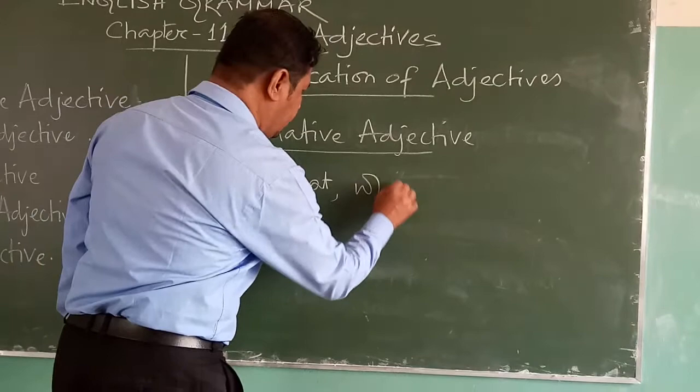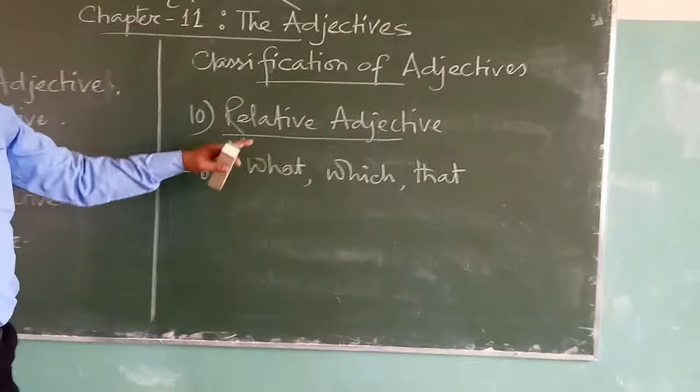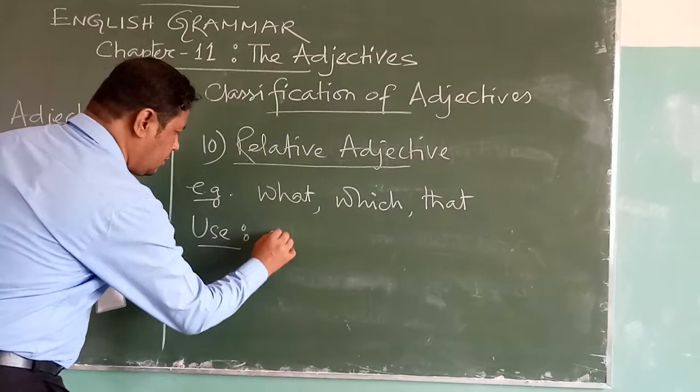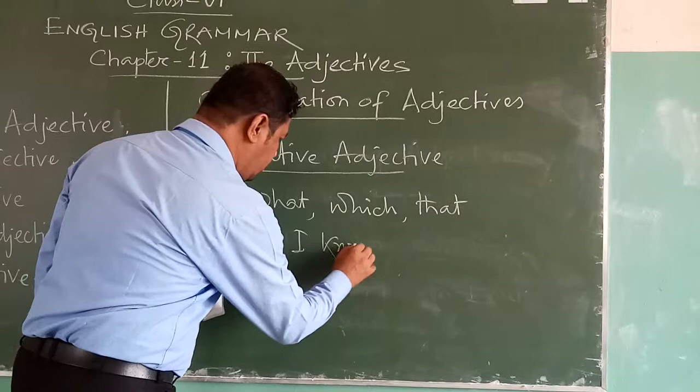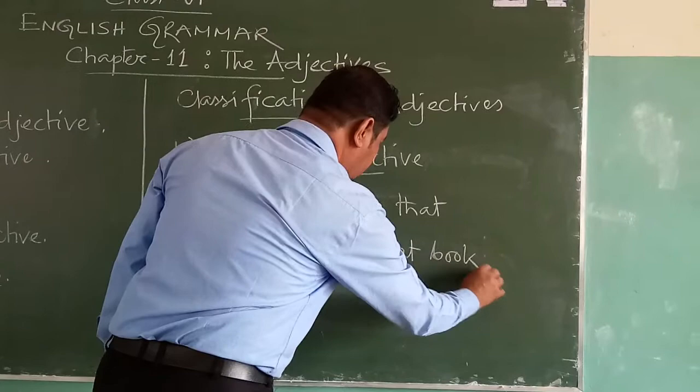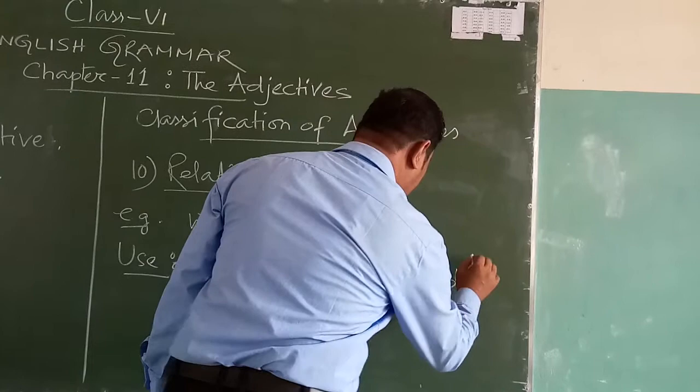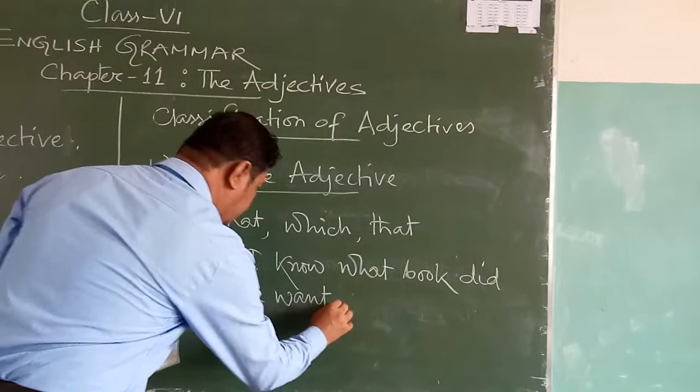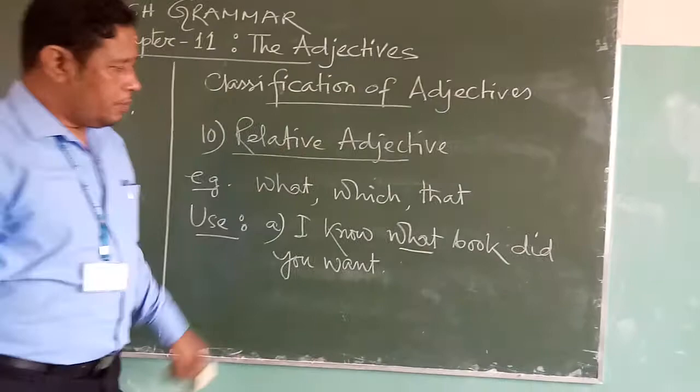The examples of relative adjective are: 'what', 'which'. For example: 'I know what book did you want.' Here the relative adjective 'what' qualifies the noun 'book' — that is why 'what' is the relative adjective in this sentence.